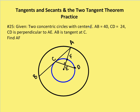We're on number 25. We're given two concentric circles. One is the blue, the smaller circle with center E. I know that this length here of the chord is also a tangent segment or a tangent line with two tangent segments. AB is equal to 40 units and CD is going to be equal to 24. I also know that CD is perpendicular to AE, and AB is tangent at point C for the smaller circle. So we're asked to find the distance of AF.